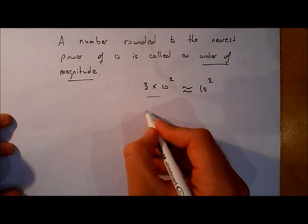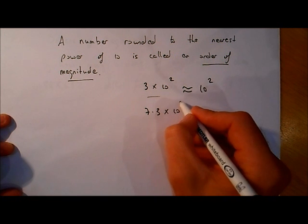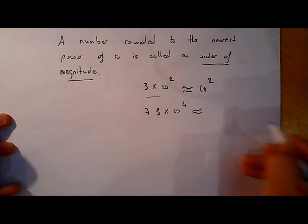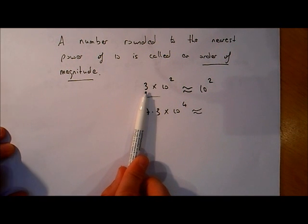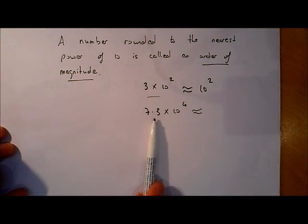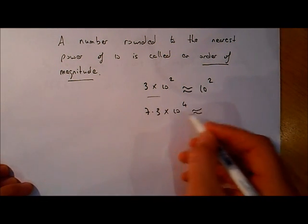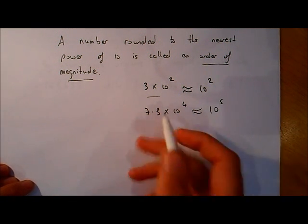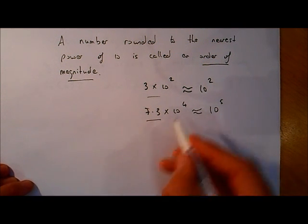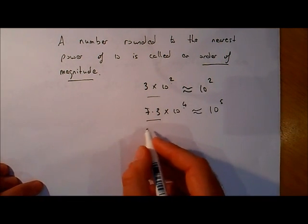Say we have 7.3 by 10 to the power of 4. This time we need to look at it a little more carefully. In the first example, 3 is less than 5, so we just take the power as-is. But because 7.3 is greater than 5, it's closer to 10, so we add one to the power — that's approximately equal to 10 to the power of 5. So if the decimal number is bigger than 5, add one to the power; if it's less than 5, leave it as it is.